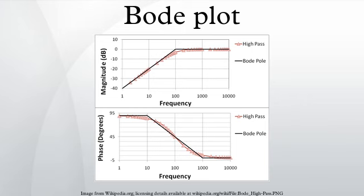The magnitude axis of the Bode plot is usually expressed as decibels of power, that is by the 20 log rule: 20 times the common logarithm of the amplitude gain. With the magnitude gain being logarithmic, Bode plots make multiplication of magnitudes a simple matter of adding distances on the graph. A Bode phase plot is a graph of phase versus frequency, also plotted on a log frequency axis, usually used in conjunction with the magnitude plot.